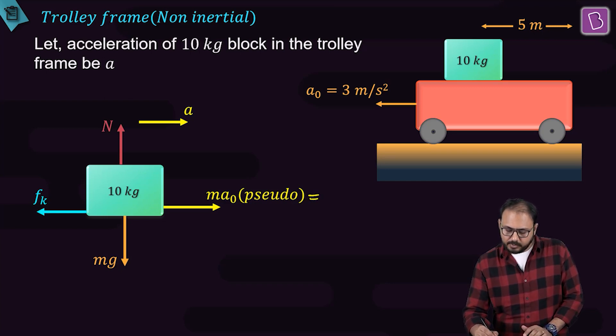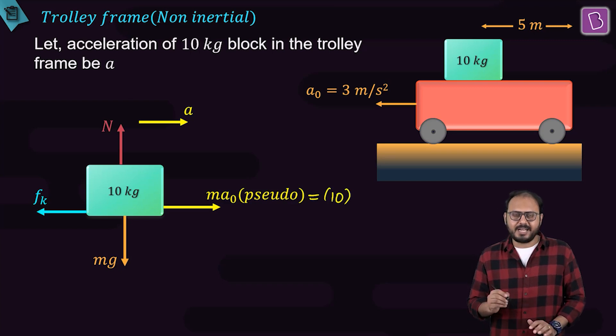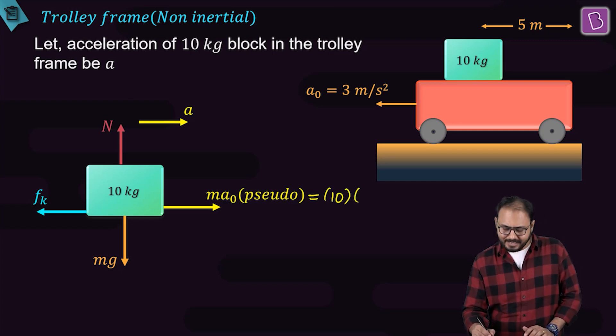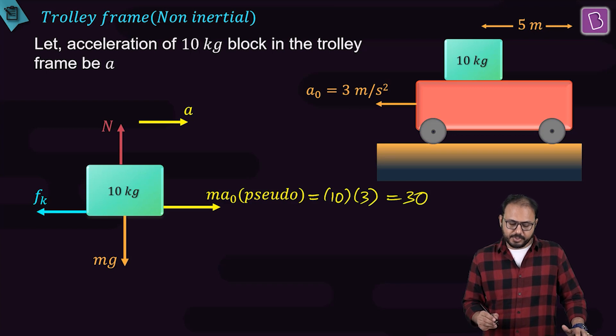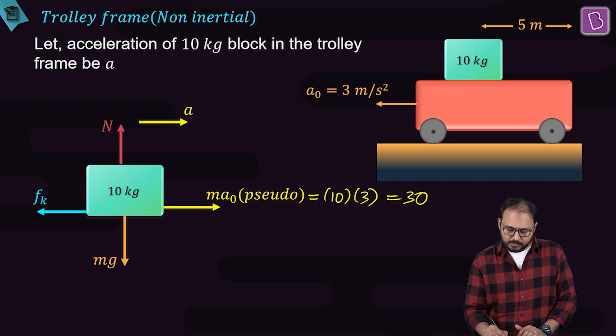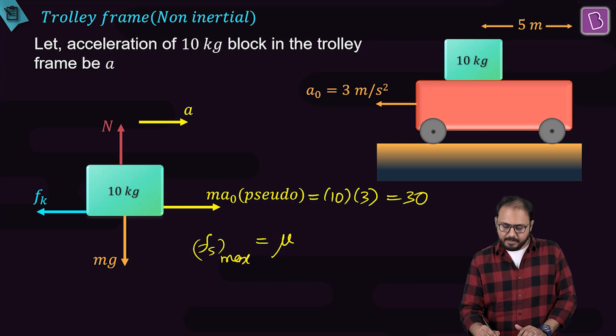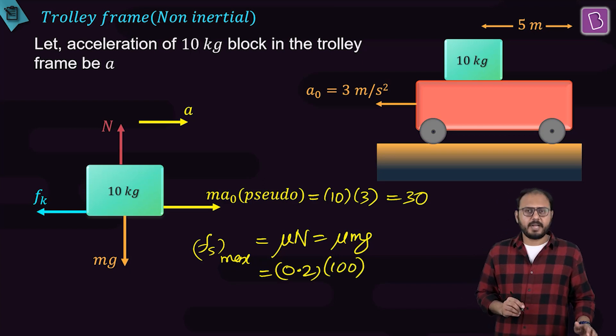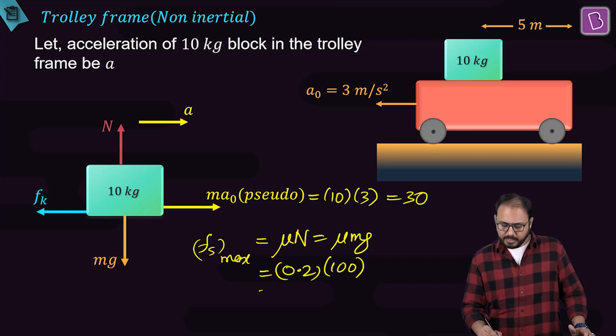What is pseudoforce equal to? Pseudoforce is equal to 10 times 3, which is equal to 30. Friction coefficient is given as 0.2. Can you find out the FSmax? FSmax is equal to μN. μN here will become equal to μmg, 0.2 multiplied by mg. mg is 100. 100 into 0.2 is equal to 20.